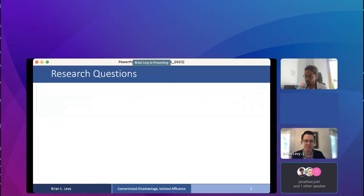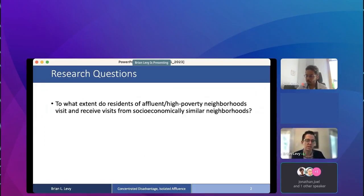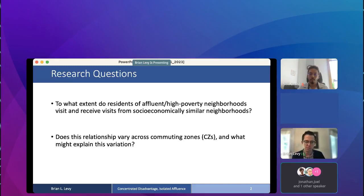Today I'll be addressing two main questions. First, to what extent do residents of affluent or high poverty neighborhoods visit and receive visits from socioeconomically similar neighborhoods? That is, do affluent neighborhoods visit and receive visits from other affluent neighborhoods, and so too for high poverty neighborhoods? All of this analysis will be in the United States context. Second question is, does this relationship vary across commuting zones?